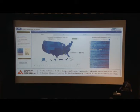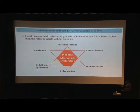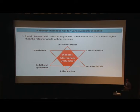As you can see, diabetes remains the seventh leading cause of death in the United States. Diabetes increases the risk for cardiovascular diseases, and there are a lot of biological processes that diabetes could affect, including cardiac fibrosis and inflammation.